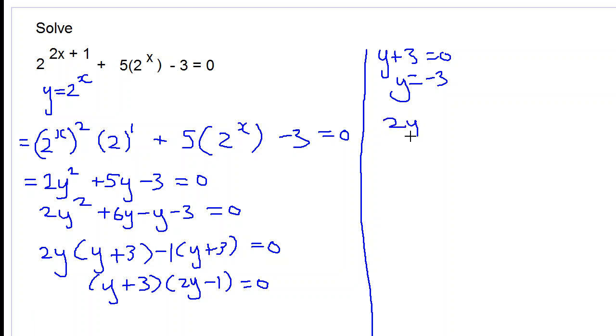Let's solve for y. We have two possibilities: y plus 3 is equal to 0, in that case y would be equal to negative 3. We also have 2y subtract 1 is equal to 0, in that case y would be equal to 1 over 2.